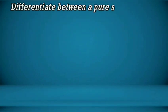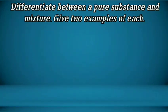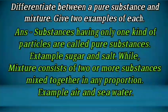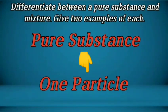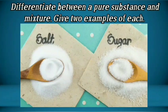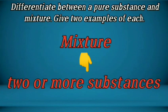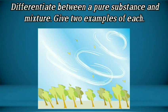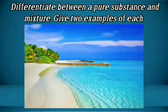Question number 5: Differentiate between a pure substance and a mixture; give two examples of each. Substances having only one kind of particles are called pure substances — example: sugar and salt. A mixture consists of two or more substances mixed together in any proportion — example: air and sea water. Air contains hydrogen, carbon dioxide, and oxygen; sea water contains salt, water, and sand.